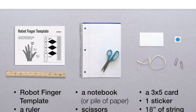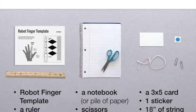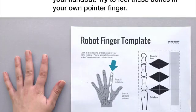Get your supplies. When you're done with this step click the arrow on the right. Look at the picture of the finger bones on your handout. Try to feel these bones in your own pointer finger.